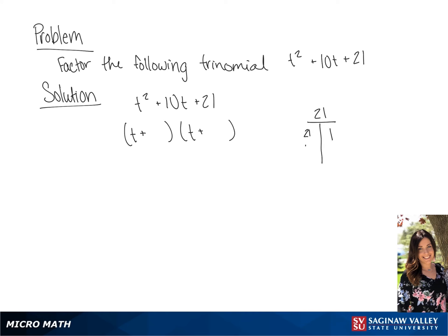So 21 and 1, when added together, equal 22. Now we have 7 and 3 — when added together, they do equal 10. So for our solution, we have t plus 7 multiplied by t plus 3.